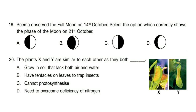Question 20: The plants X and Y are similar to each other as they both blank. Correct answer is option D — need to overcome deficiency of nitrogen.